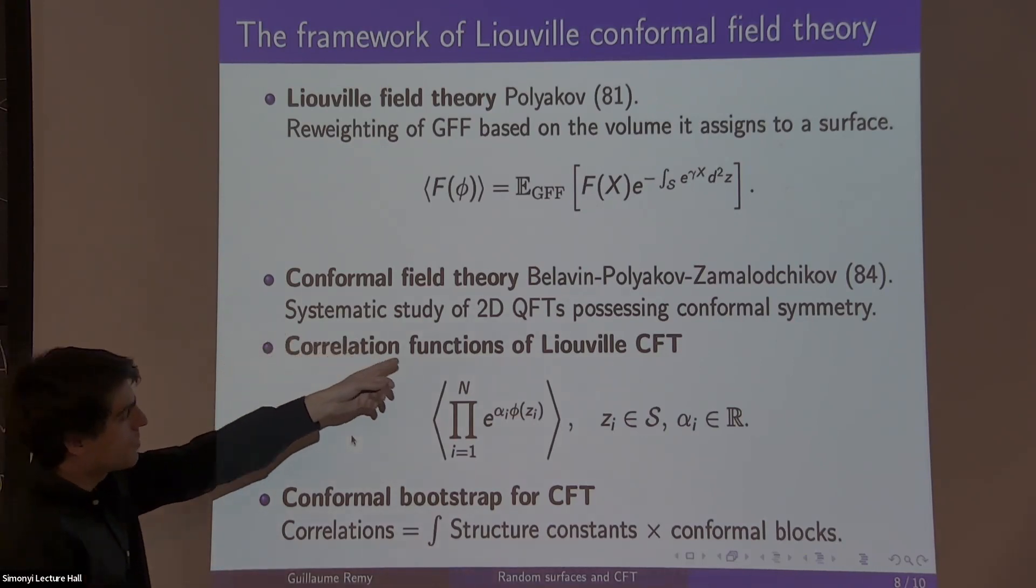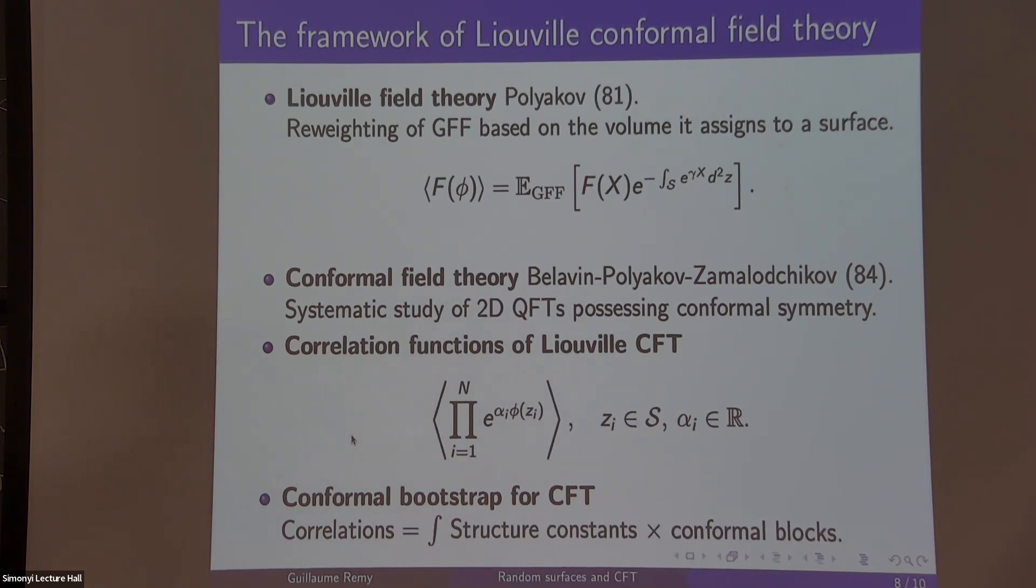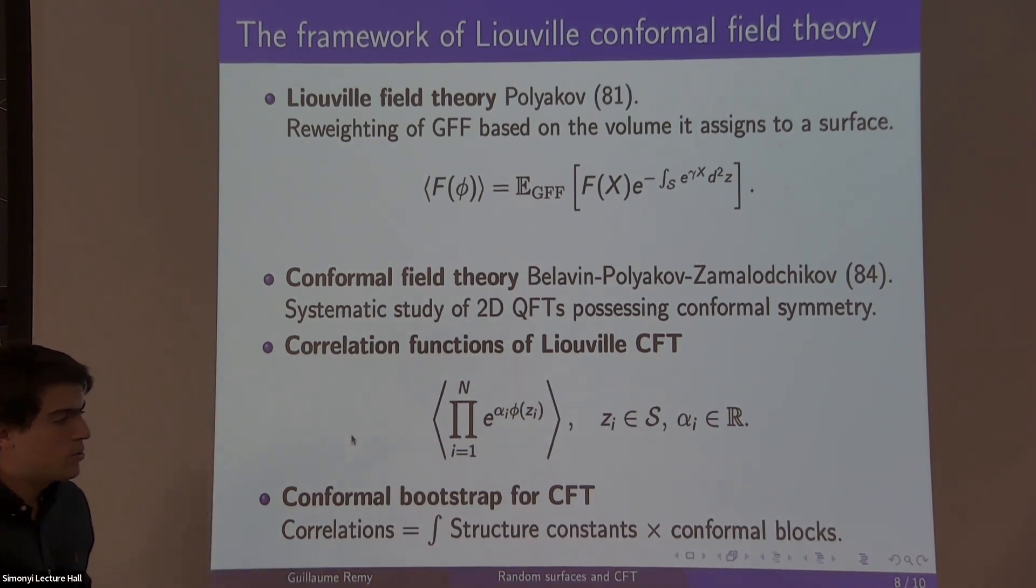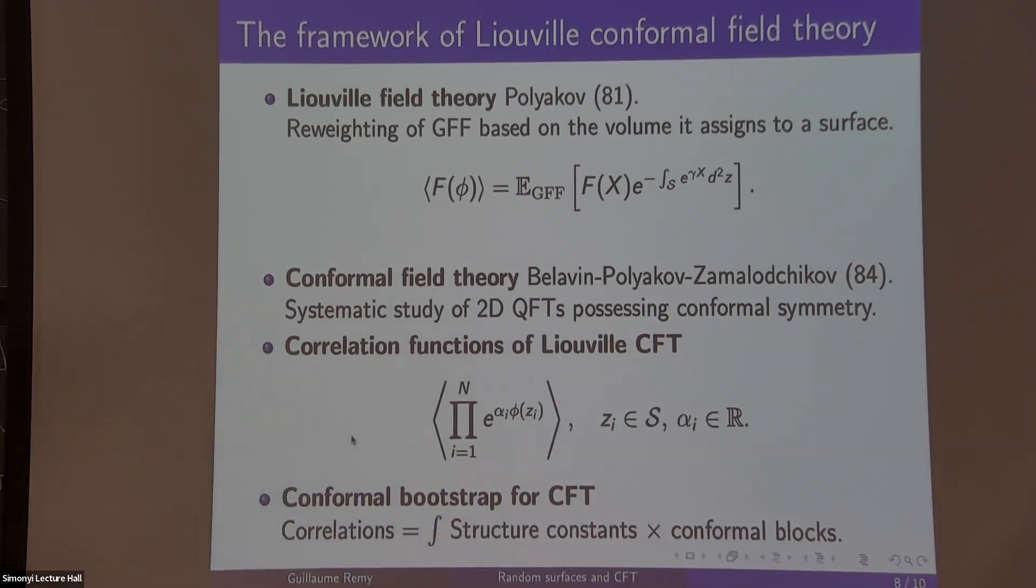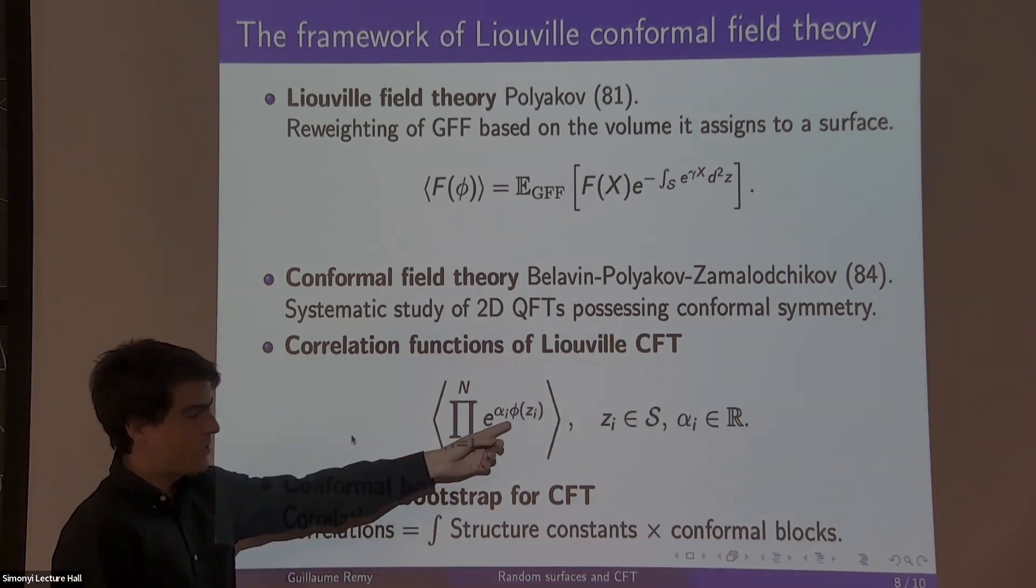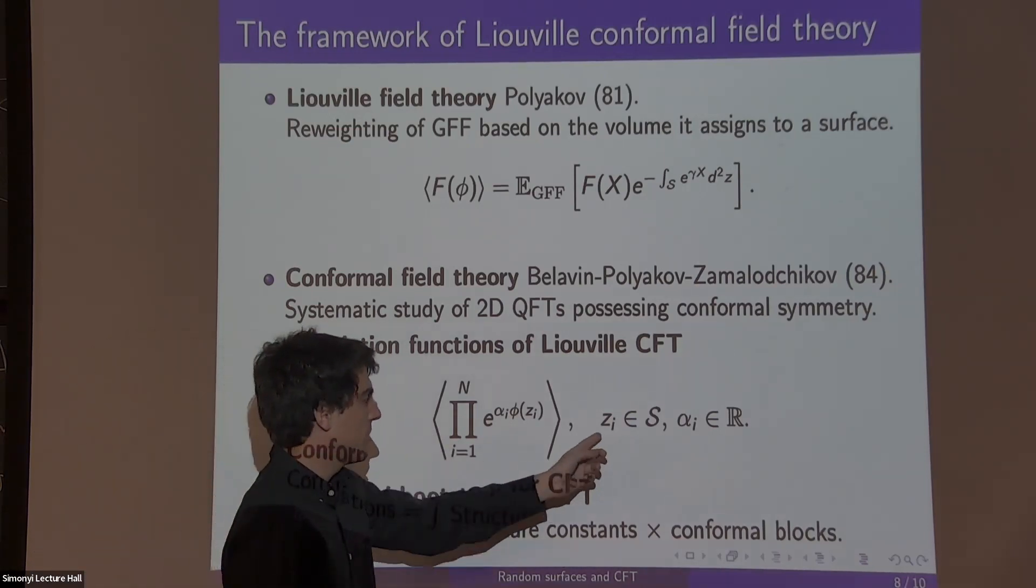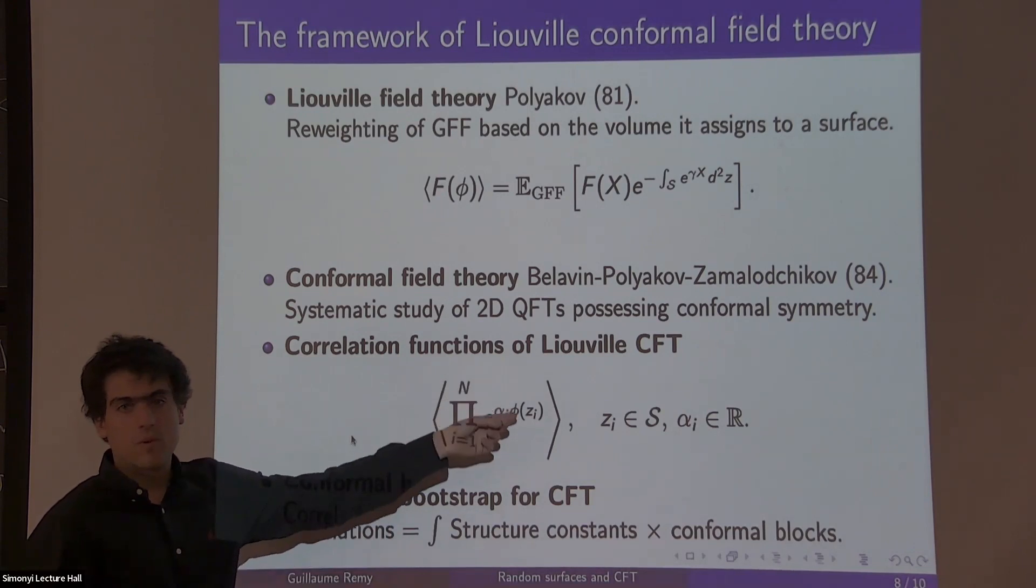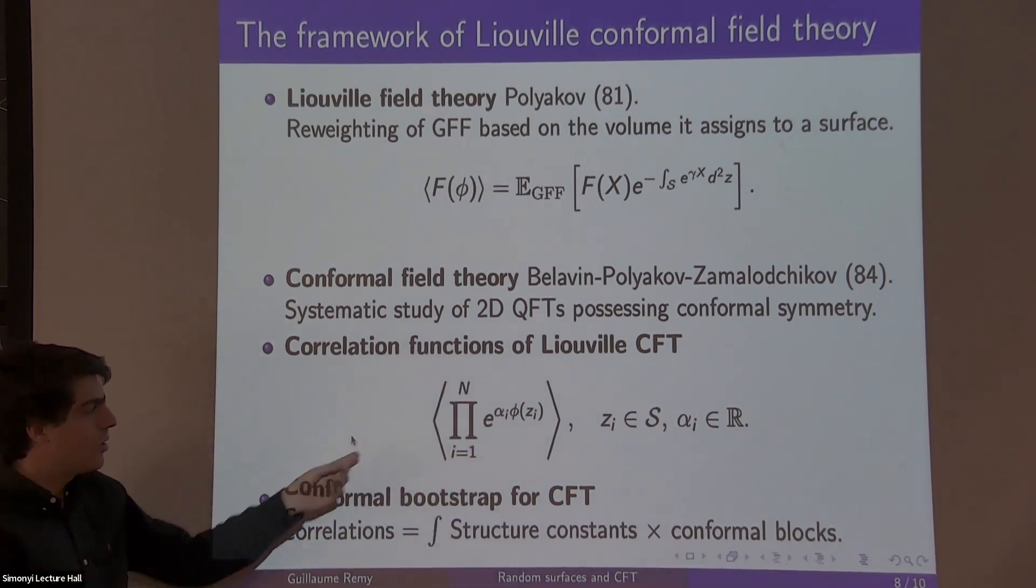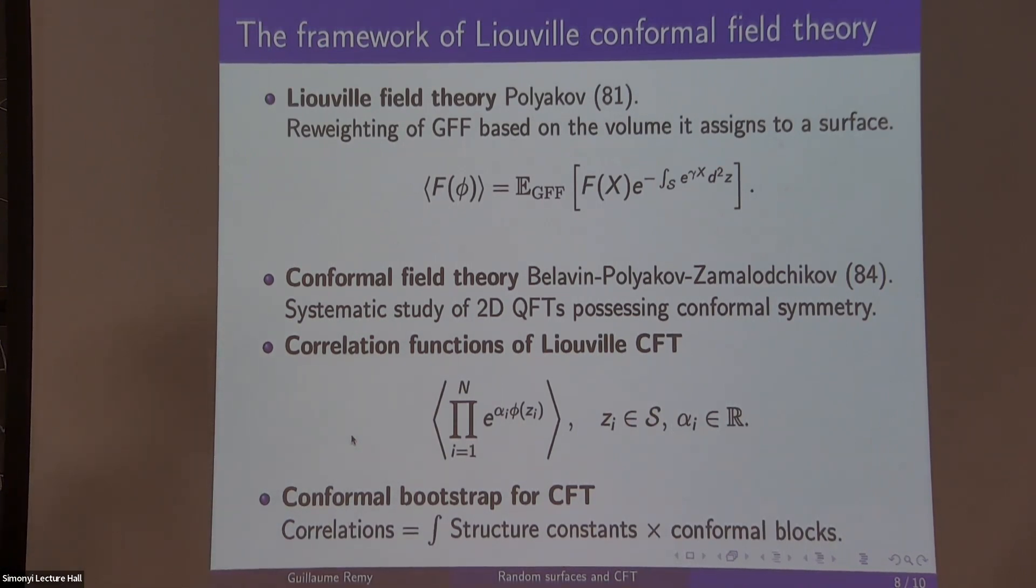Conformal field theory, the framework was introduced in physics in '84 by Belavin, Polyakov, Zamolodchikov. It's a systematic study of all the two-dimensional quantum field theories that have conformal symmetry in two dimensions. Conformal symmetries are infinite dimensional group symmetries, very constraining for the observables of the theory. This framework allows you to compute all the correlation functions. These observables are like a joint Laplace transform of your field at different points.